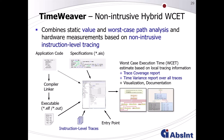On top of that, we also provide a time variance report over all traces. Since individual instructions can have different execution timings across different test scenarios, we show how the variance is distributed. For worst-case consideration, always the maximum timings are extracted for each instruction. A visualization of the worst-case path is produced, along with extensive documentation. But how can these instruction-level traces be produced in a non-intrusive way?